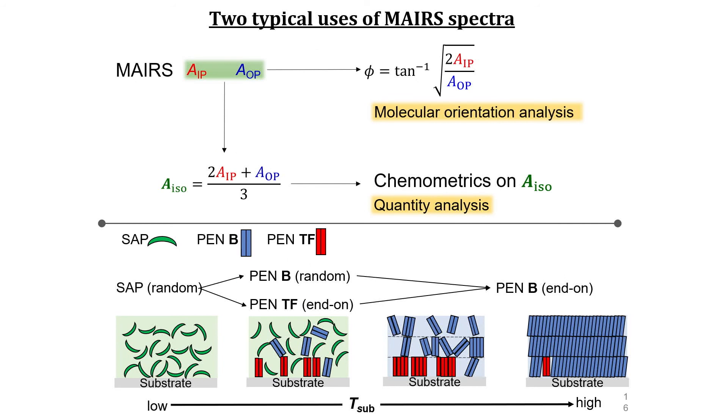In this manner, I have shown that MAIRS has major two roles. One of them is for molecular orientation analysis with a MAIRS-specific character that both IP and OP spectra are obtained with a common ordinate scale. The other one is the quantity analysis using the A_iso spectra.